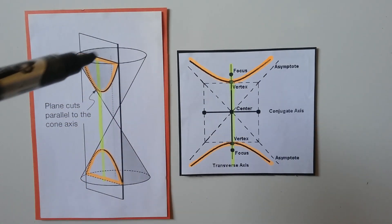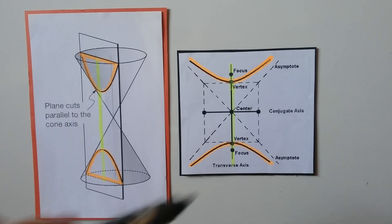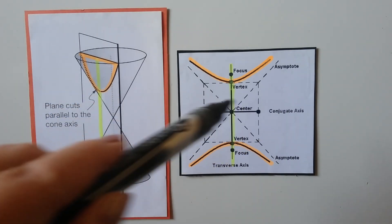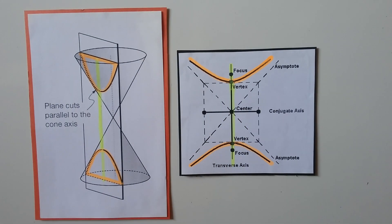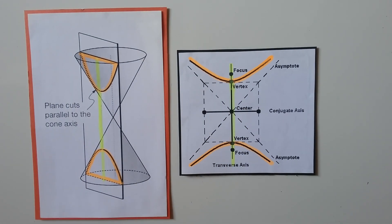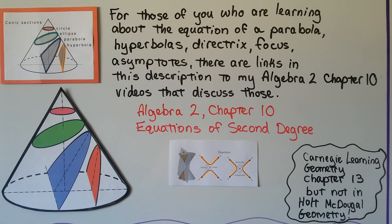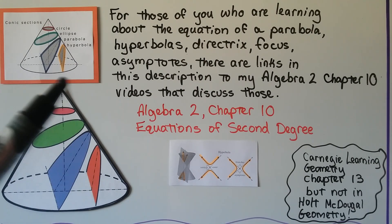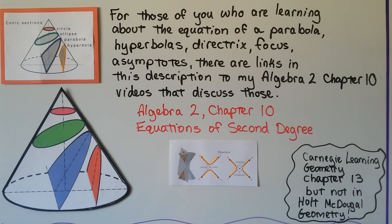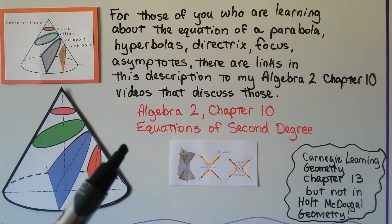Now I know a lot of you are following me along in the Holt-McDougall geometry book, but some of you are not using that book. Like in the Carnegie Learning Geometry chapter 13, you're going to be learning about the equation of a parabola, hyperbolas, directrix, focus, asymptotes. And there's links in this description to my Algebra 2 chapter 10 videos that discuss those, if you are covering this in geometry.